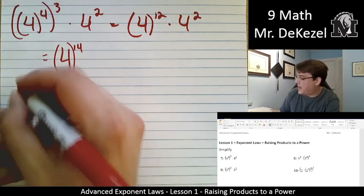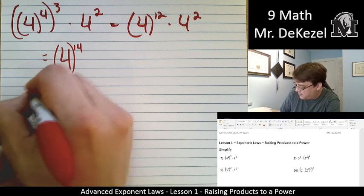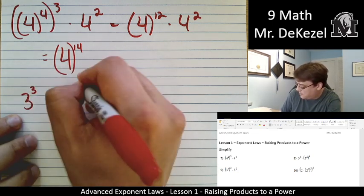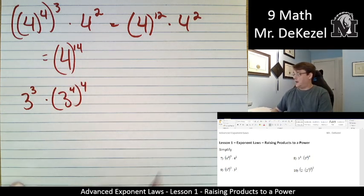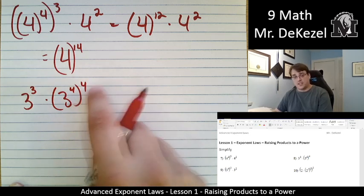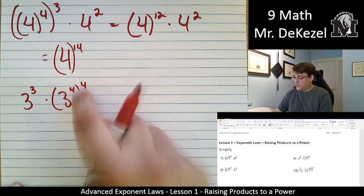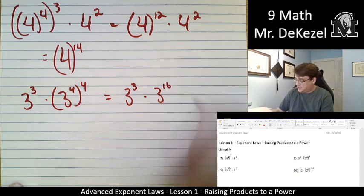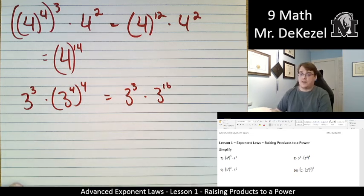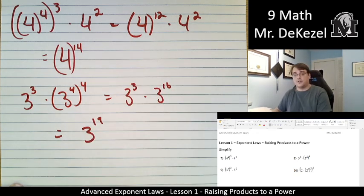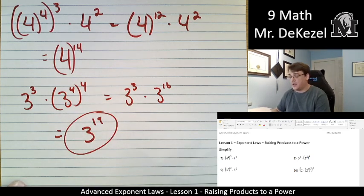Let's do the next one at number 8. We have 3 to the power of 3 multiplied by 3 to the power of 4, all to the power of 4. Let's get rid of the exponent of the exponent on this side so we can work with it. 4 times 4 is 16, so this is the same as 3 to the power of 3 times 3 to the power of 16. They're multiplied together so we add the exponents — we get 3 to the power of 19. Don't worry about finding out what that actually is.